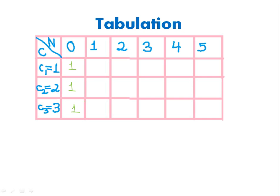Now fill the first row. When n equals 1 and c1 equals 1, there is only one way, so store 1. When n equals 2 with only a 1-rupee coin, there is still one way: pay 1 rupee twice. Similarly for n equals 3, 4, and 5 — each has only one way. For n equals 5 the way is 1+1+1+1+1.